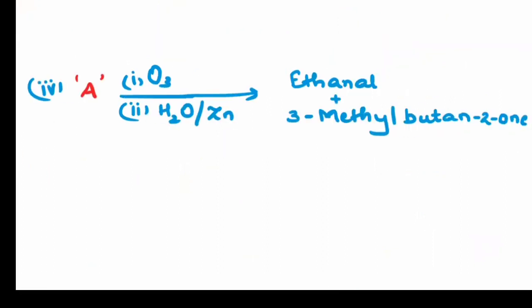Let us proceed ahead with the next question. In the fourth question again we need to find out A. The product is ethanol and 3-methylbutane-2-one. First of all let us write down the structure. This is the structure for ethanol and 3-methylbutane-2-one.